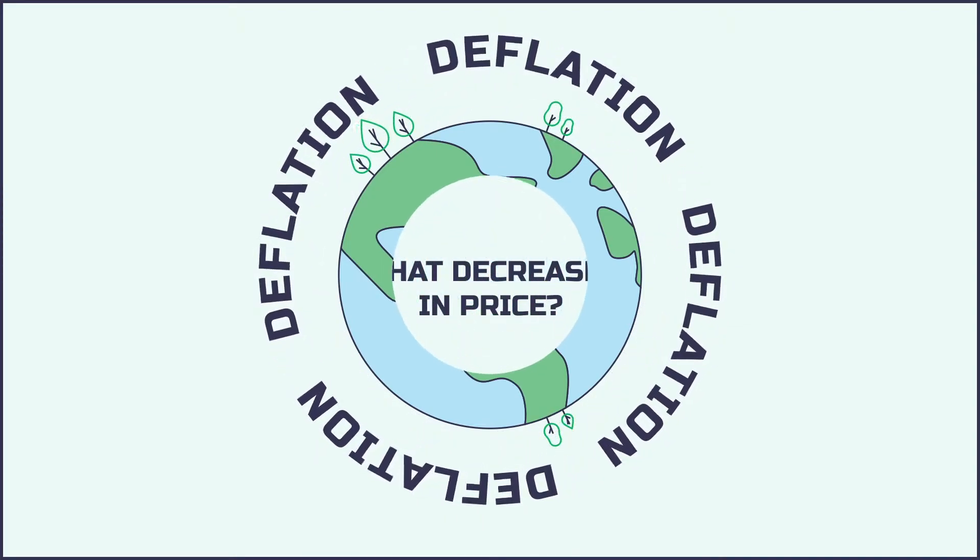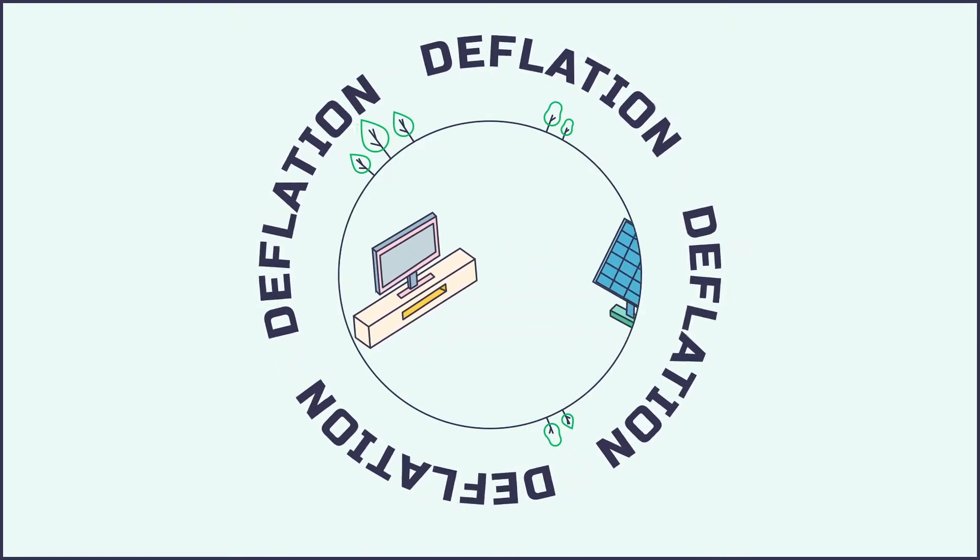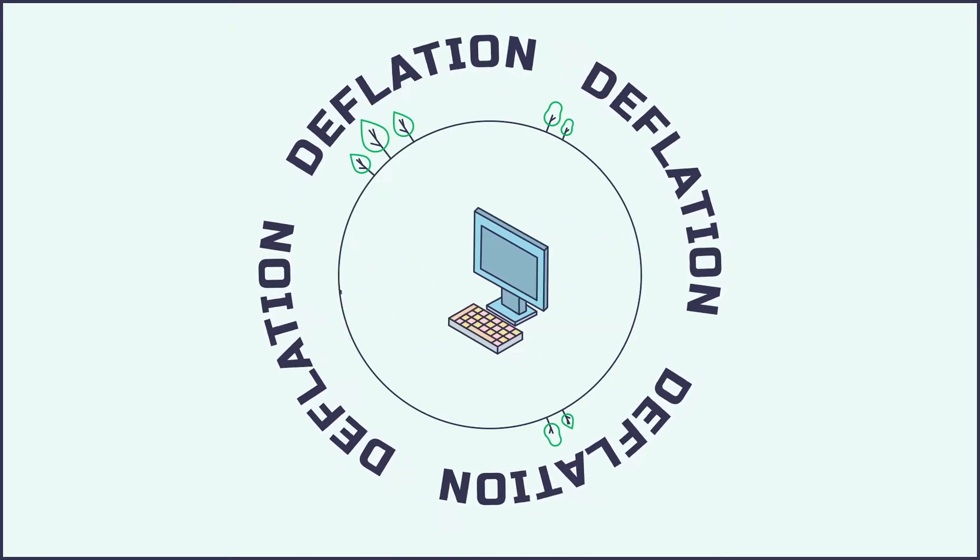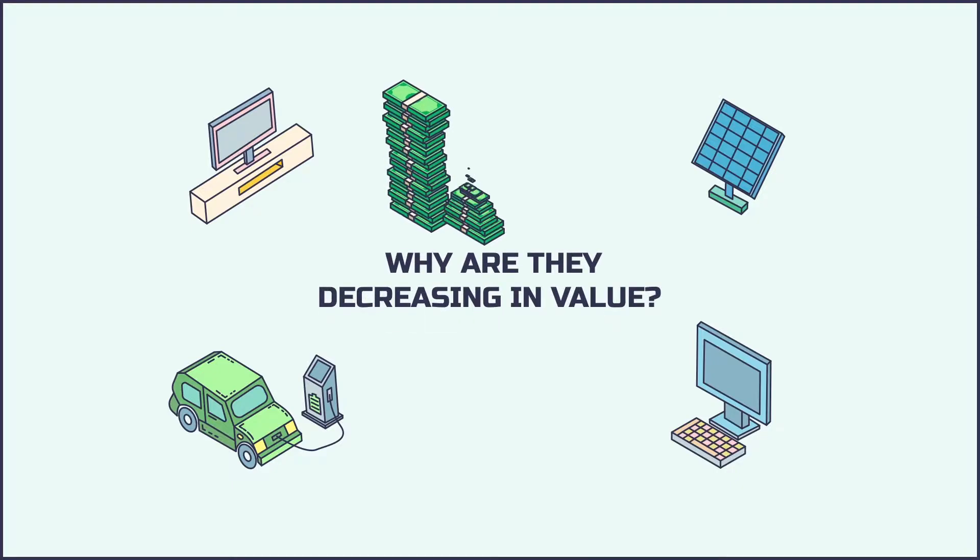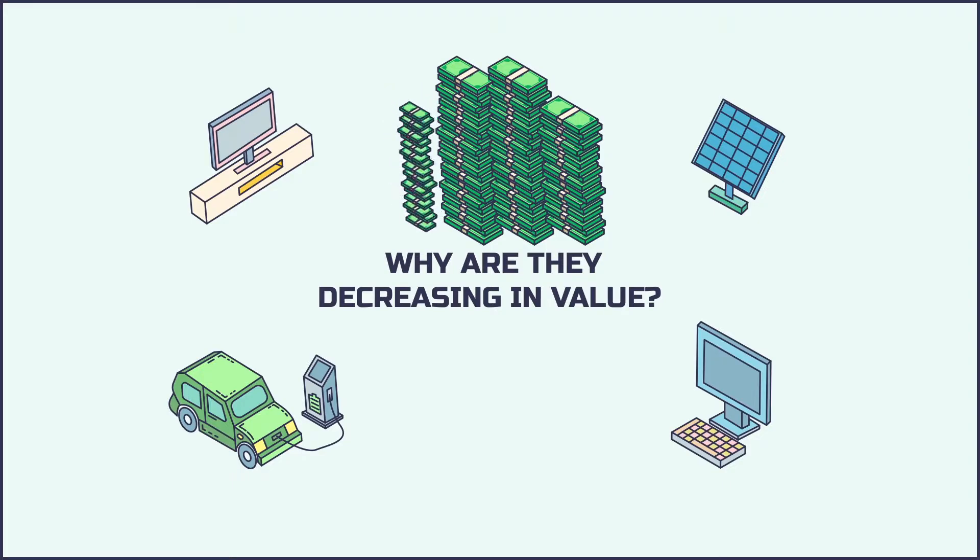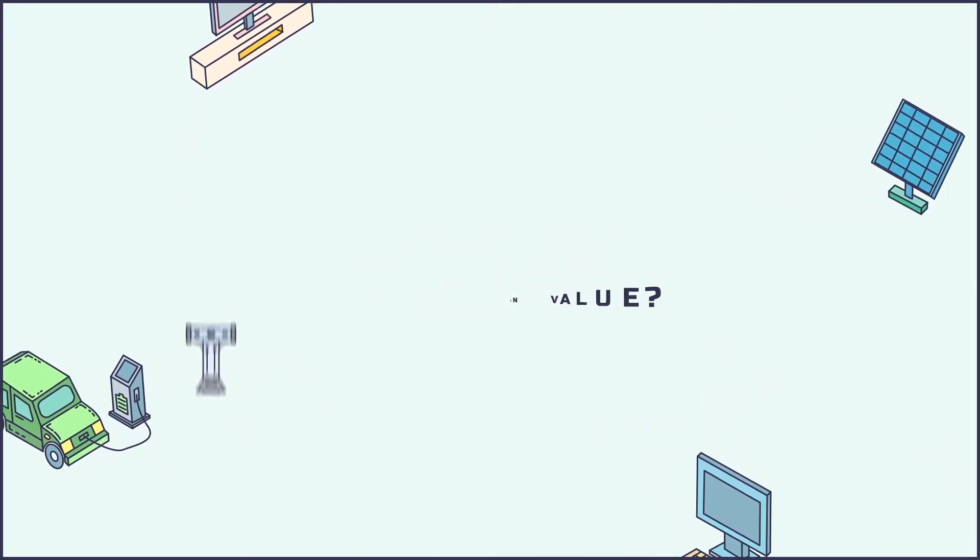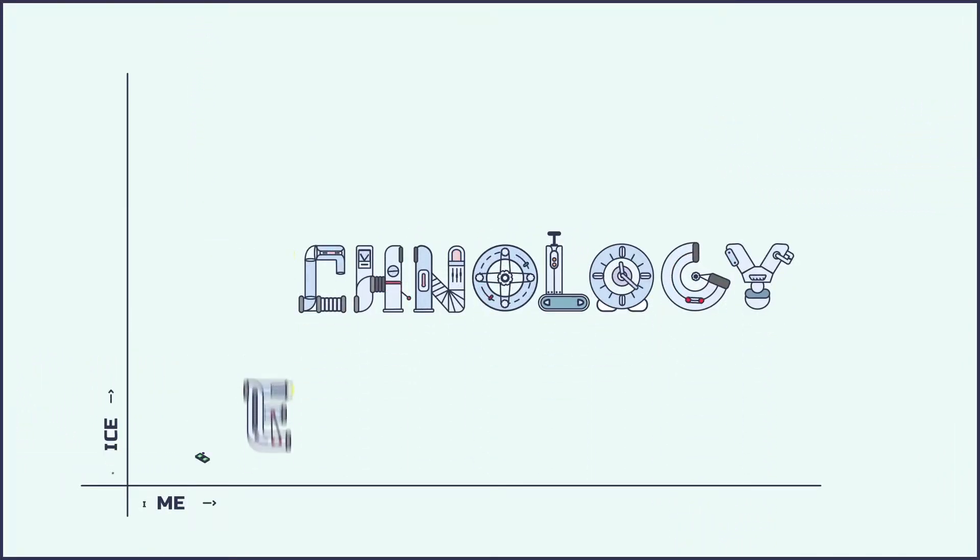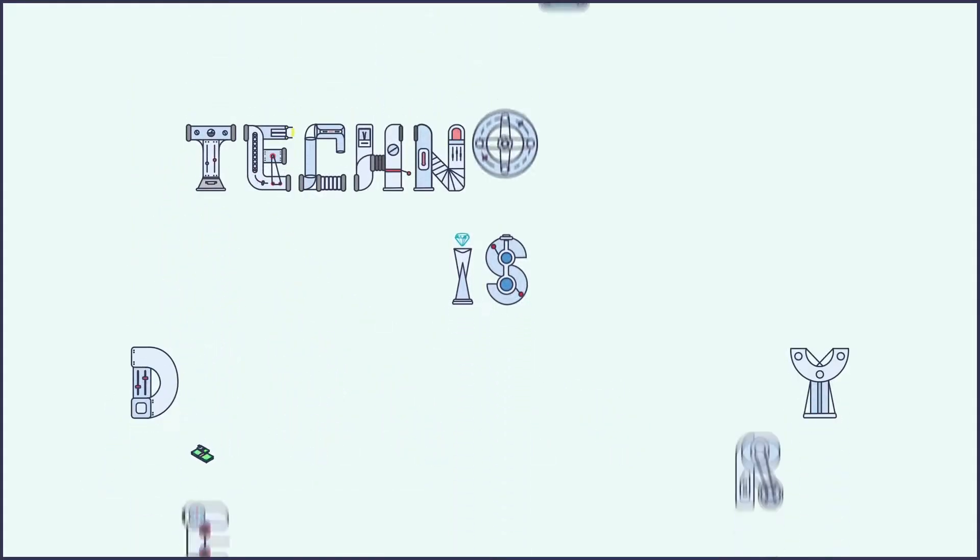Now try to understand what life would be like under a deflationary economy. Think about the past 20 years. In your everyday life, what goods have decreased in price? You could say TVs, solar panels, electric vehicles or computers. If the costs of these items are reducing over time, we can classify them as deflationary. Why are these items decreasing in value over time, even with the government printing tons of money? Shouldn't printing money increase the prices of everything in the system? We can answer this question by understanding what these items all have in common. They are all products of technology.